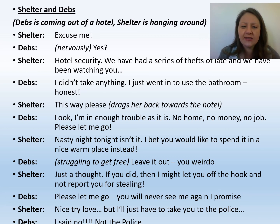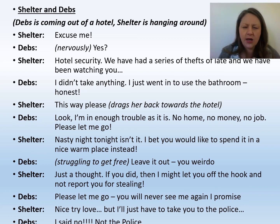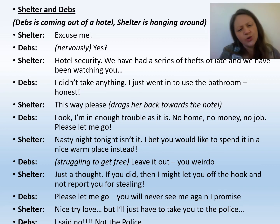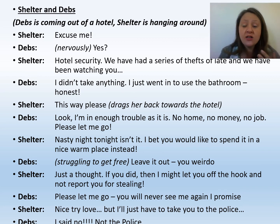So you can see from these two scenes how Shelter lures his victims back in very different ways. With females — Deb's — he threatens her, it's really overpowering. Whereas with Tom, he's a little bit more laddy, a little bit more chummy. He lures them back in very different ways.